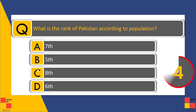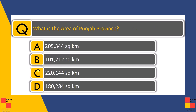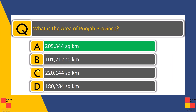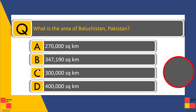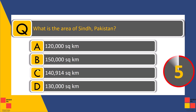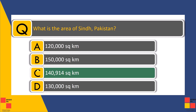What is the rank of Pakistan according to population in the world? — Fifth. What is the area of Punjab province? — 205,344 square kilometers. What is the area of Balochistan province? — 347,119 square kilometers. What is the area of Sindh? — 140,914 square kilometers.